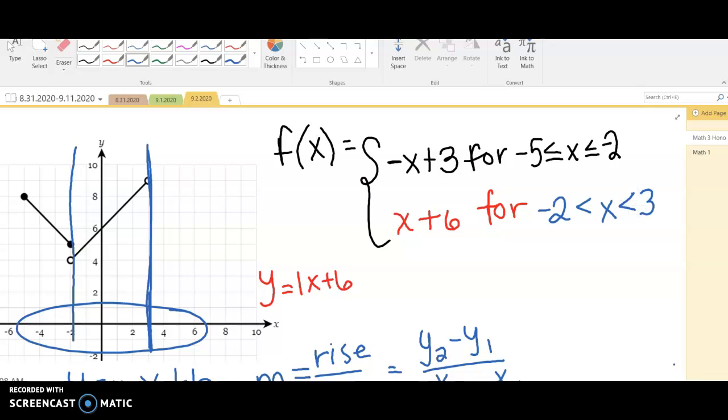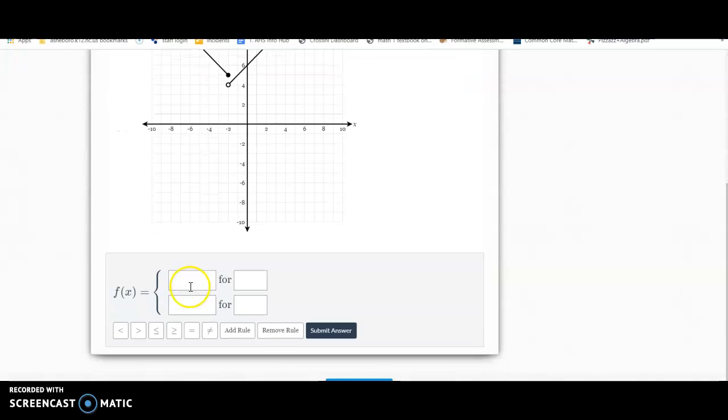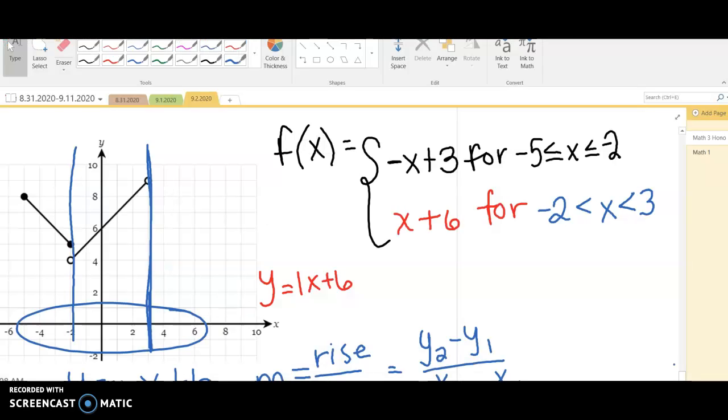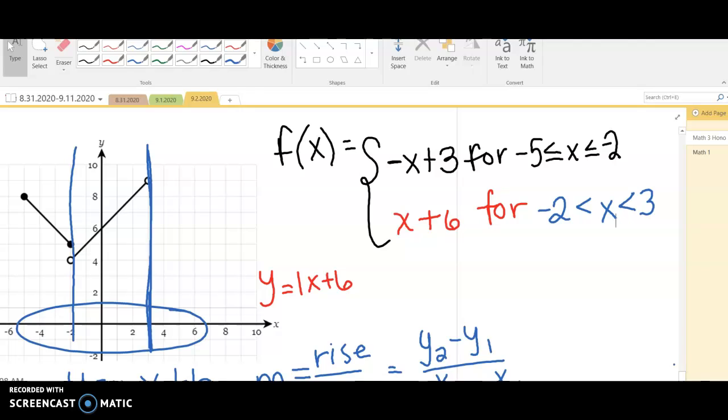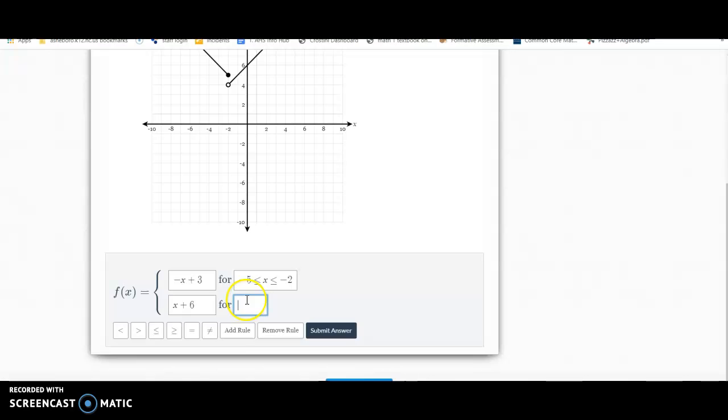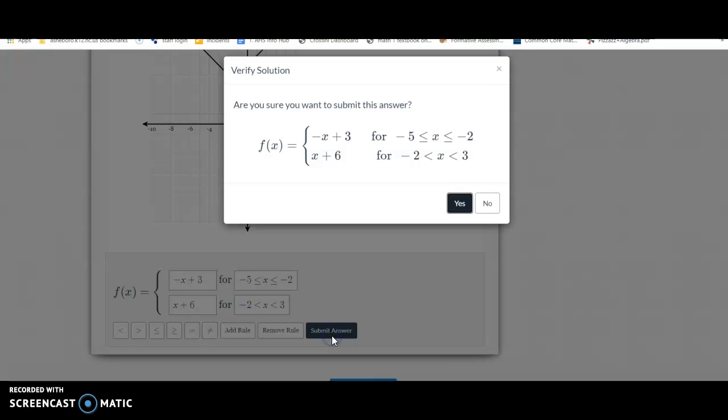How would you type that into DeltaMath? You would type it in exactly how we wrote it. So we found the equation to be negative x plus 3, and then from negative 5 to negative 2. So negative 5, it was equal to, because they were closed. We're talking about x, because it's the domain. And it goes to negative 2 like that. Now let's type in the next one, x plus 6. And then it was negative 2 to 3. And it was less than, negative 2, less than x, less than 3, because they were open circles right there.